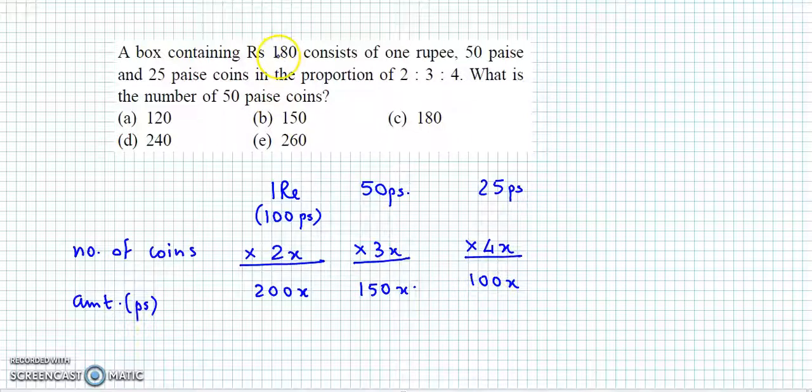mein hai rupees 180. So hume ye equation form kar sakte hai: 200x plus 150x plus 100x is equal to, ab yahaan pe rupees diya hai 180 to isse bhi hume paise mein convert karte. So 180 into 100, to 2 zeros aur aa jayenge.